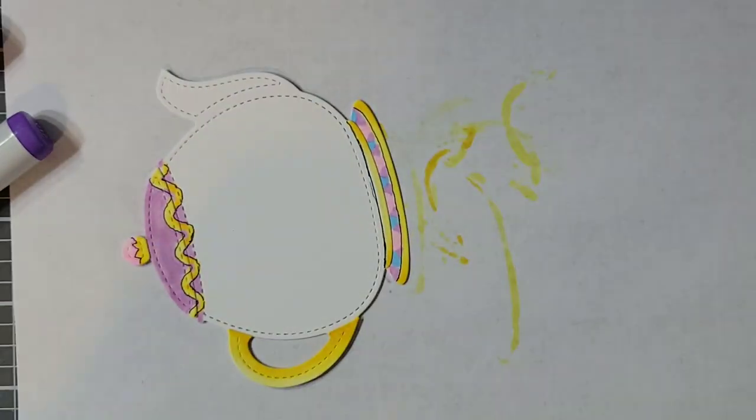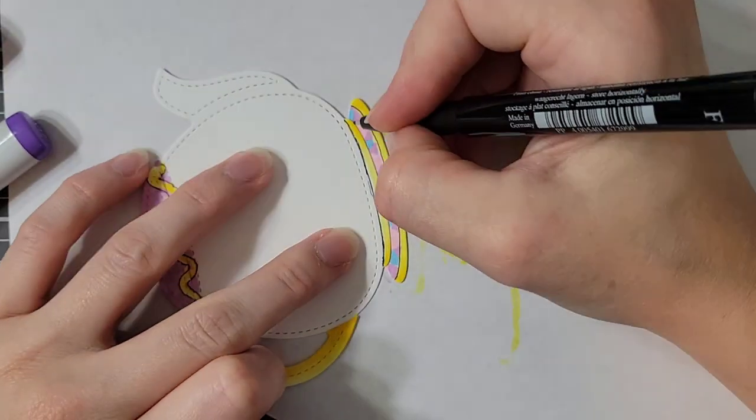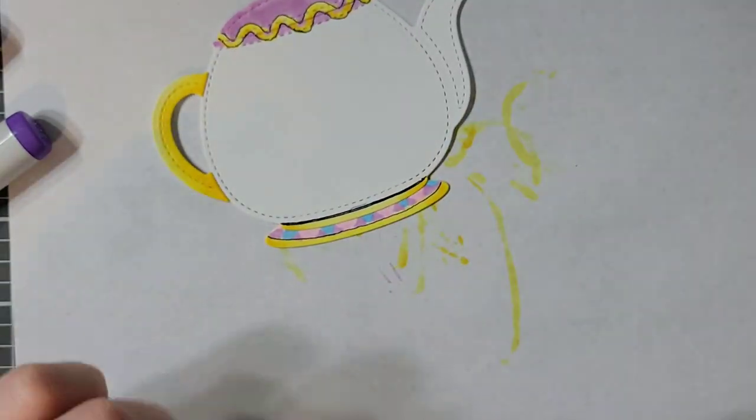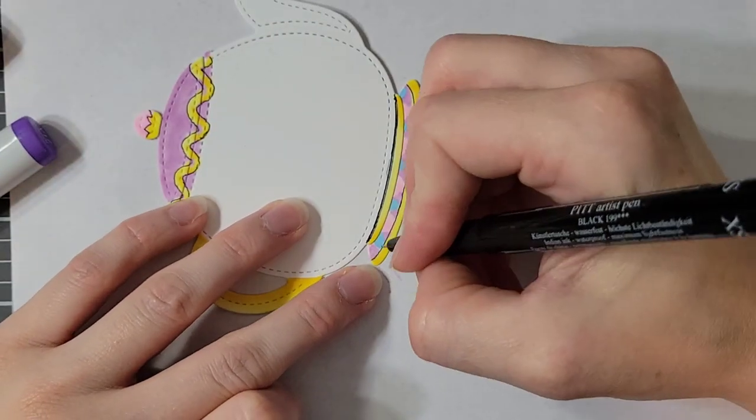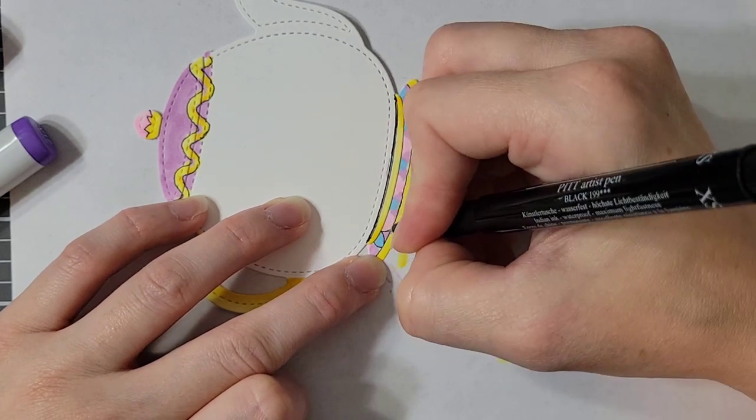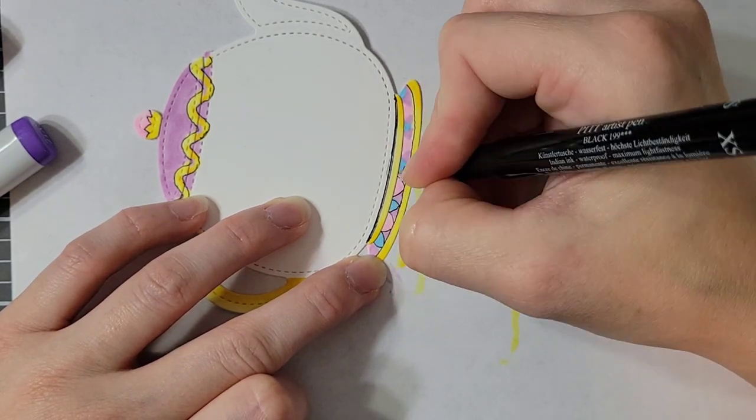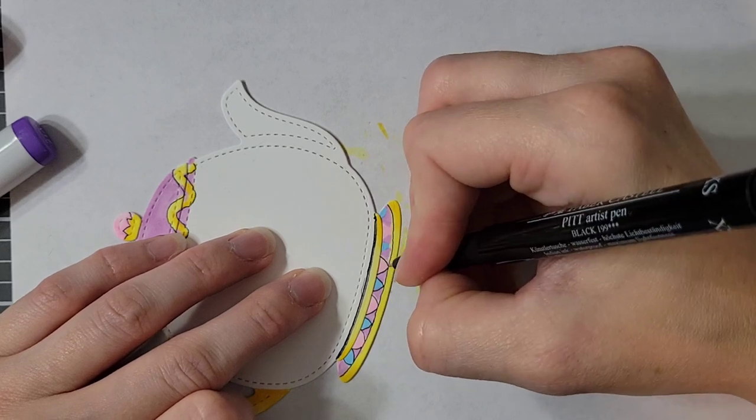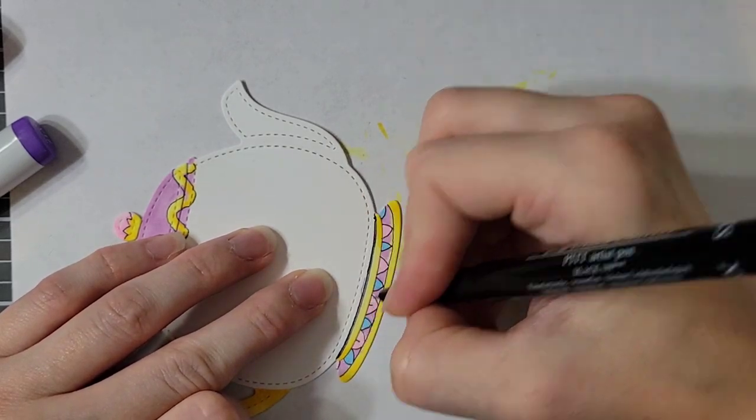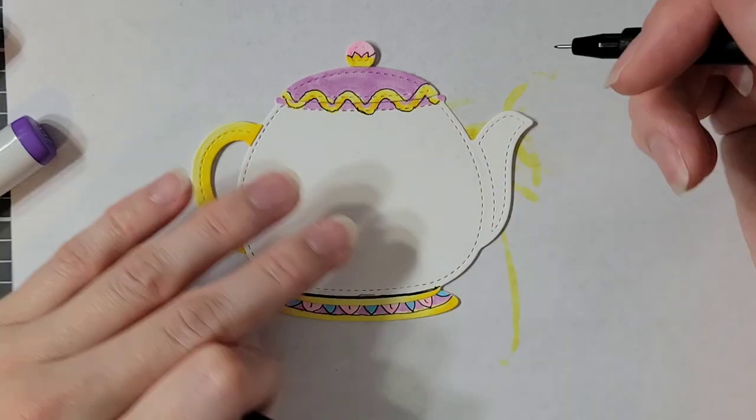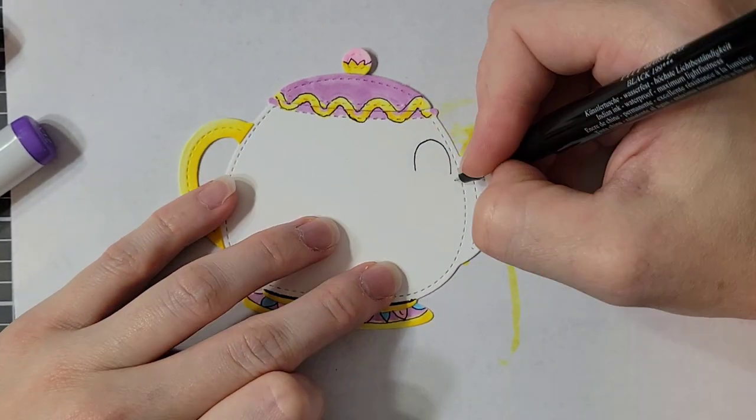When I'm trying to color in where the die has made lines, it was super difficult, so I kind of got it a little wonky. So I decided to pull out a thicker pen and add that line back in there to make it look a little less messy.